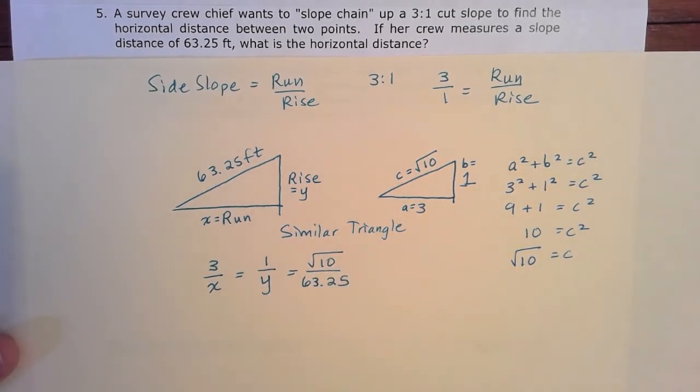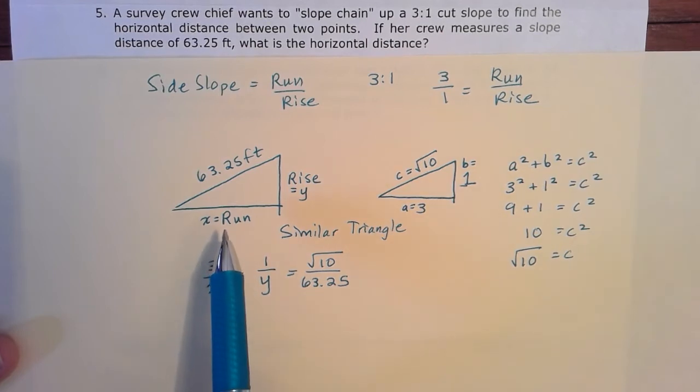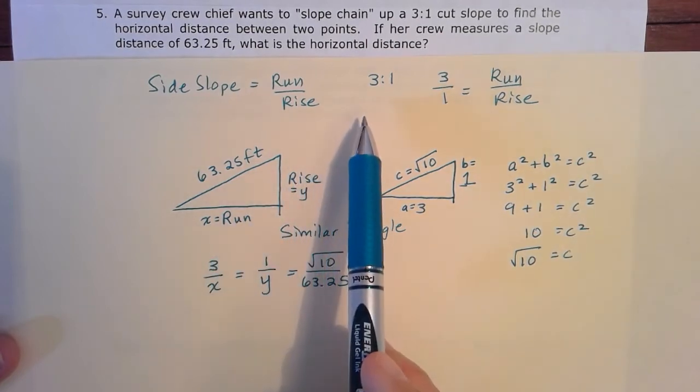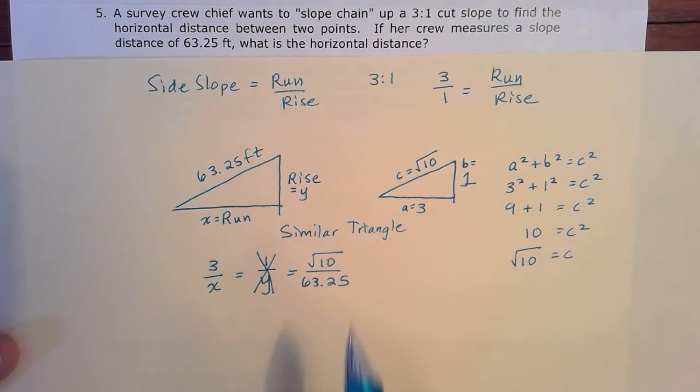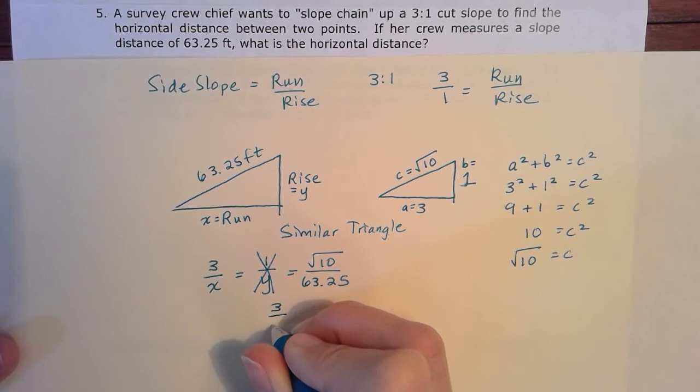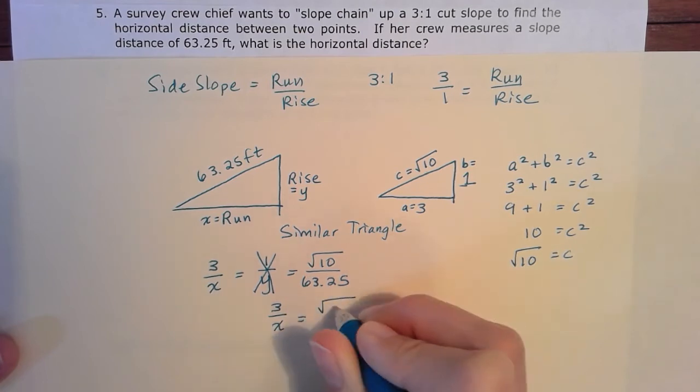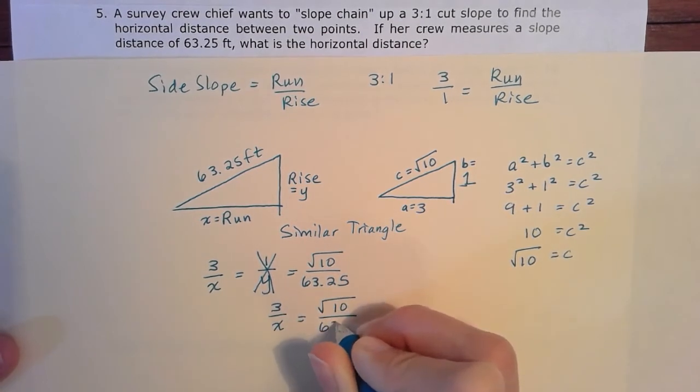And remember, in FEP statics, when we have these similar triangles, we can pick any two of these relationships to set equal to each other to solve for the variable. We do have two variables here, so we've got to get rid of one of these two equations. Really all we're interested in is the horizontal distance, which is the run. So we don't really care about the rise, so we can just cross that guy off and use these two equations and set them equal to each other. So let's rewrite them down here. So three over X is equal to the square root of ten over 63.25.